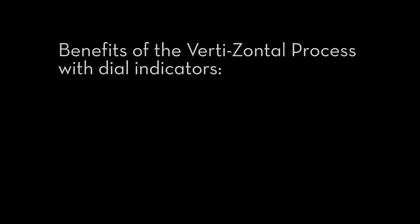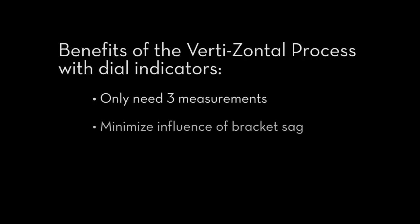Some of the benefits of the vertizontal process are: one, you only need three measurements as opposed to four. Two, by doing that you eliminate or certainly minimize any influence from bracket sag. And number three, and probably one of the most important, is by utilizing the vertizontal process you're measuring true shaft centerlines and not just faces and rims of couplings.